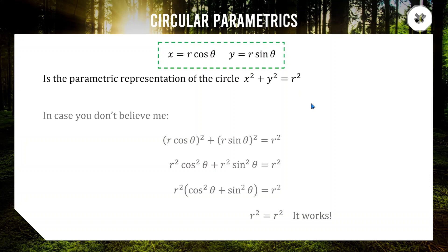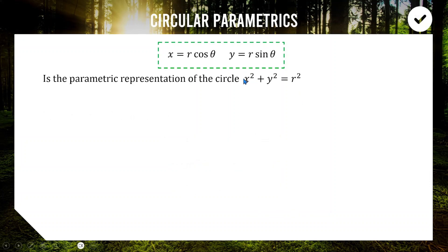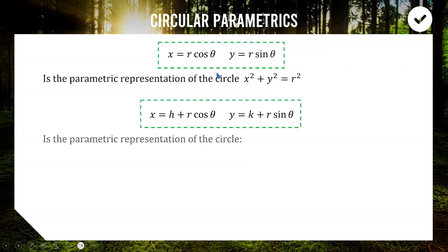If your circle has a changed centre, the parametric equations are very similar. For the equation x minus H all squared plus y minus K all squared equals R squared — a circle with centre (H, K) and radius R — we keep our parametric equations the same but add the x-value of the centre to the start of x, and the y-value of the centre to the start of y. So x equals H plus R cos theta and y equals K plus R sine theta.